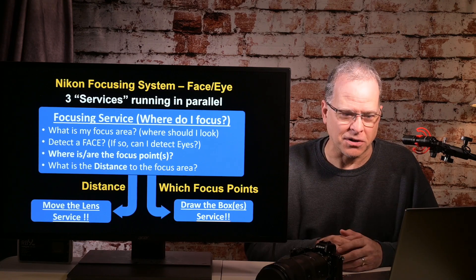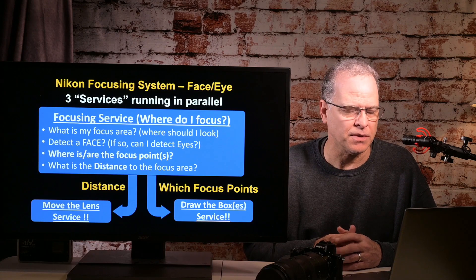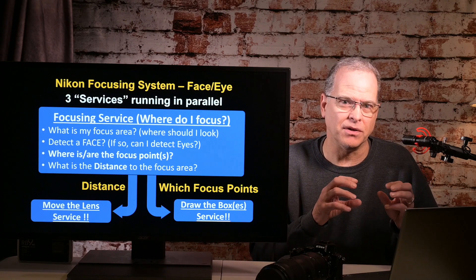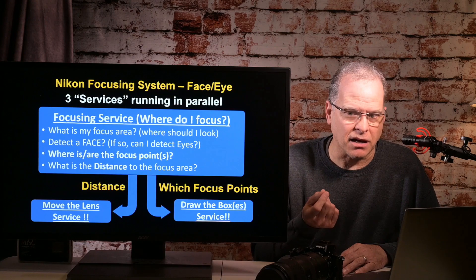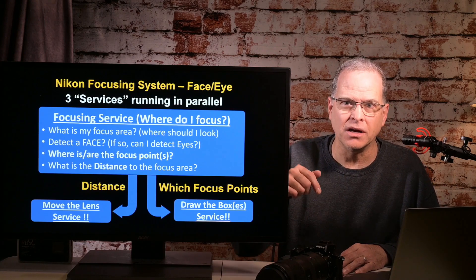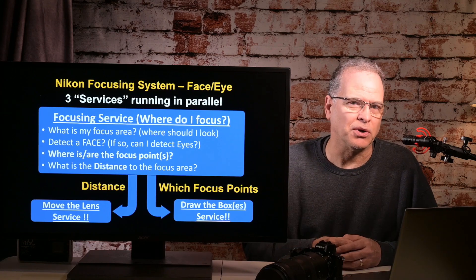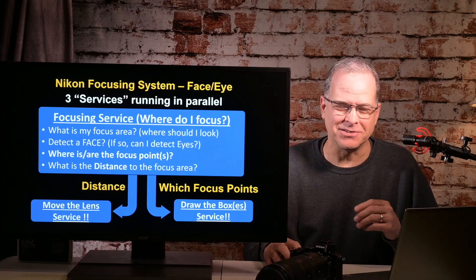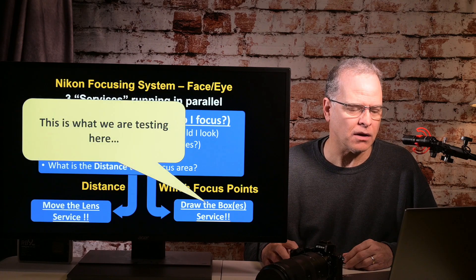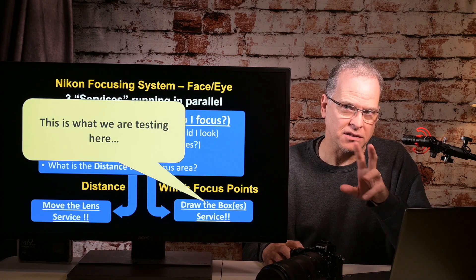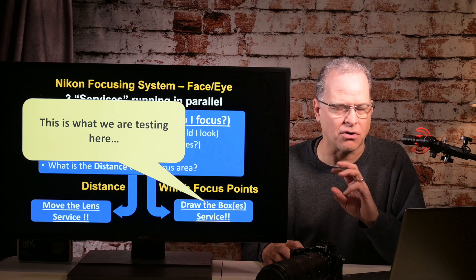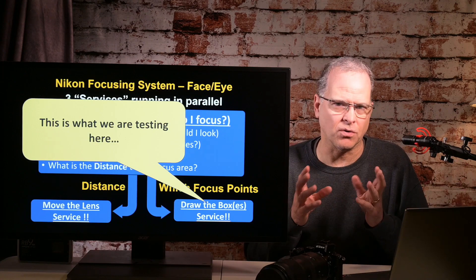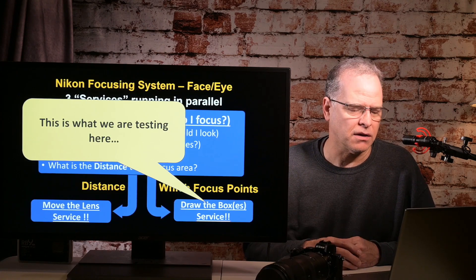From what I can tell with this particular update, the developers at Nikon who write that box-drawing piece of code — their code needed a little bit of work. So anyway, that's what this test is about: to see how well that works. Just to be clear, this particular test is only testing the box-drawing service. This doesn't have to do with face/eye detection accuracy — it has to do with how quickly the box gets drawn in the face/eye detection focus mode.